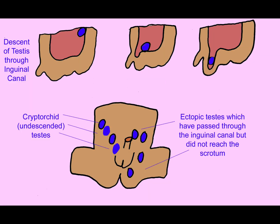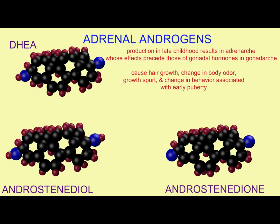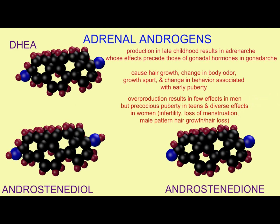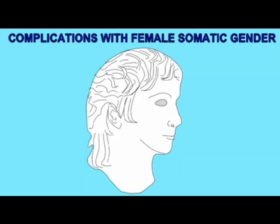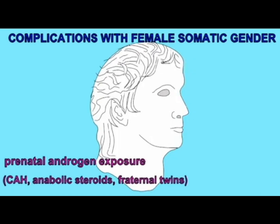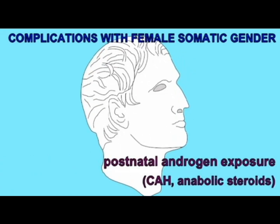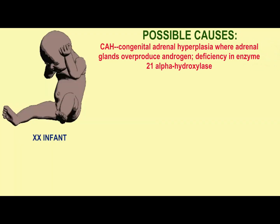An abnormally small penis could resemble a clitoris, and the urethra might exit closer to the scrotum. The scrotum could resemble labia and may accompany a micropenis. For infants who are XX, they could be exposed to too much androgen, and the main cause is CAH, congenital adrenal hyperplasia, in which the adrenal glands overproduce androgens caused by a deficiency in a specific enzyme. But excess androgens can come from other sources.